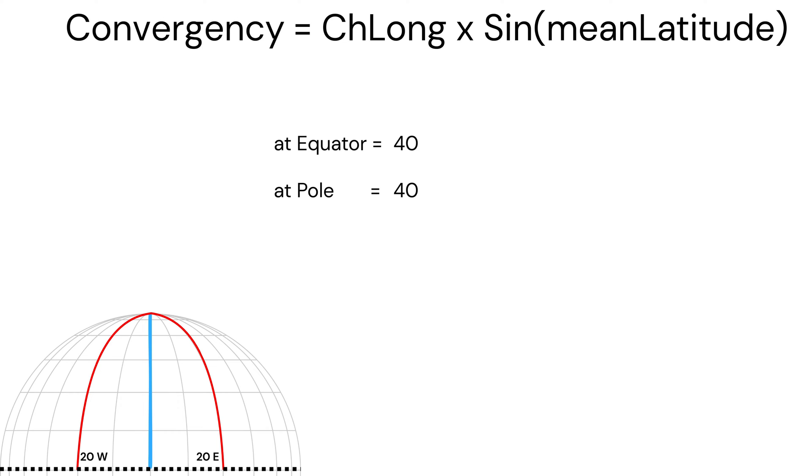At equator, 40 into sin 0 is 0. This gives the minimum value. At poles, 40 into sin 90 is 40. This gives the maximum value.